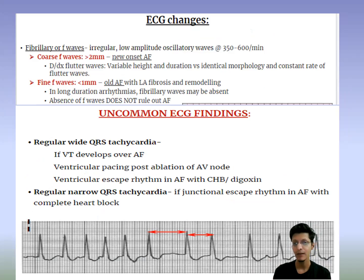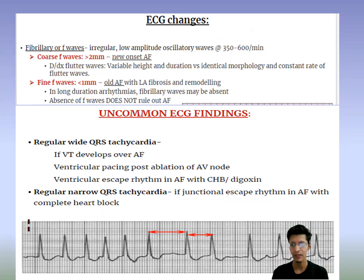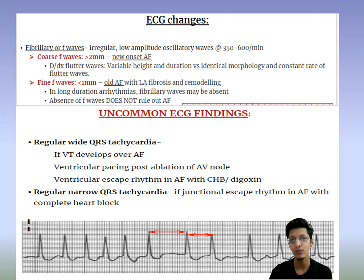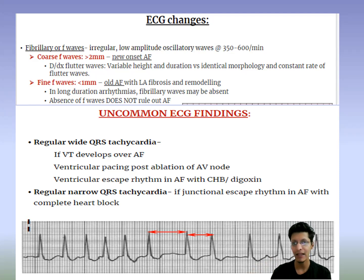Regarding ECG changes: there will be fibrillatory waves, absence of P waves, and heart rate of 350 to 600 beats per minute. To differentiate old AF from new AF, look at the fibrillatory (F) waves. If the F waves are coarse and more than 2 mm, it is new onset AF. If the F waves are fine with less than 1 mm, it is old AF with left atrial fibrosis and remodeling.